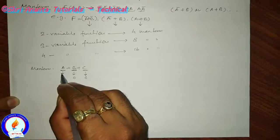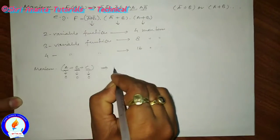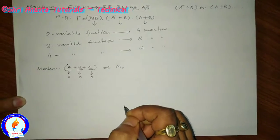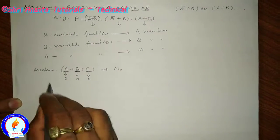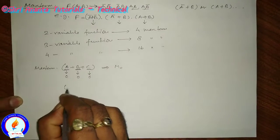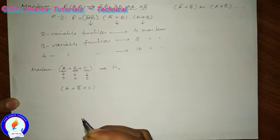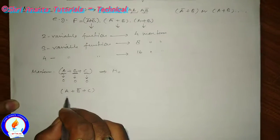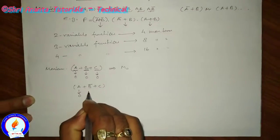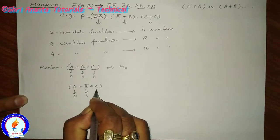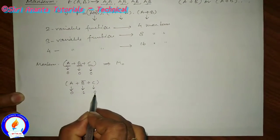So this max term is represented as M0. Another example: if we have the max term a plus b-bar plus c, then the binary value of a is 0, b-bar is 1, and c is 0. So 0, 1, 0 gives us 2.